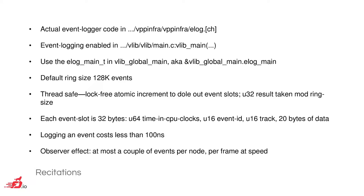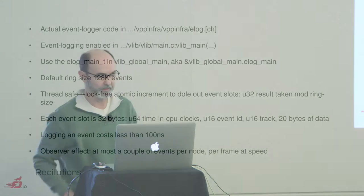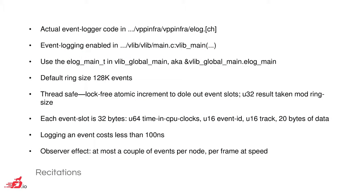The actual event logger code is in vppinfra elog.h. Event logging is enabled in an obvious place in main.c. In order to log events, the elog_main_t that's embedded in vlib_global_main is the place where you want to actually log events.